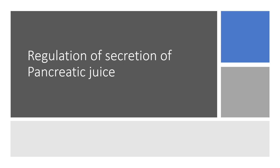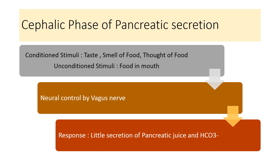Regulation of secretion of pancreatic juice can be described in three phases: cephalic phase, gastric phase, and intestinal phase. In the cephalic phase it is increased by conditioned stimuli like taste of food, smell of food, and thought of food, and unconditional stimuli like presence of food in the mouth. This increases activity of the vagus nerve and the response is secretion of pancreatic juice as well as bicarbonate.